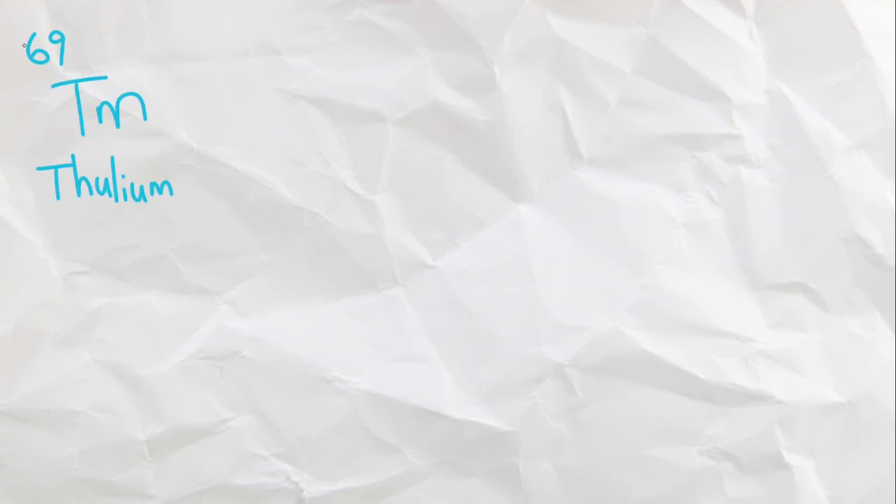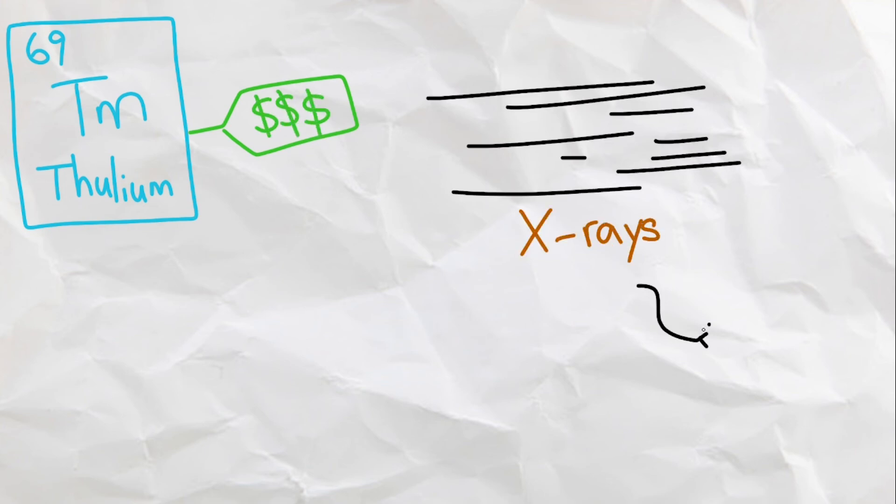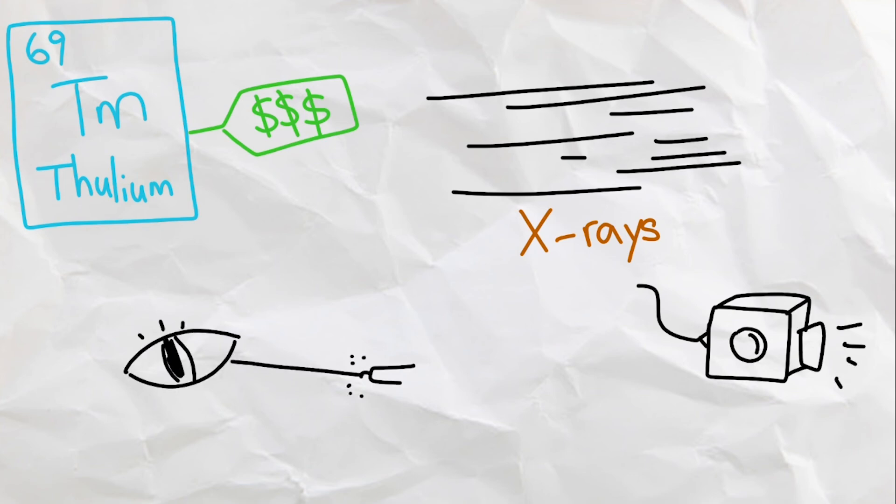Next, we have Thulium, one of the least abundant elements on earth, so it is quite expensive. When irradiated, this element can produce x-rays, which is potentially used in portable x-rays one day. It also may have applications in laser eye surgeries.